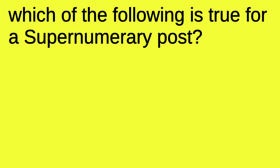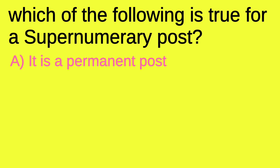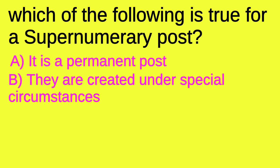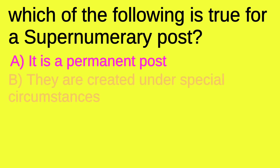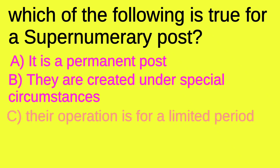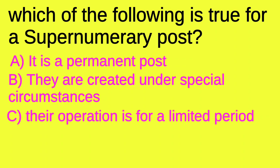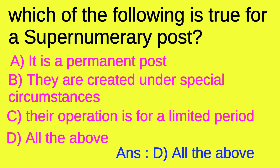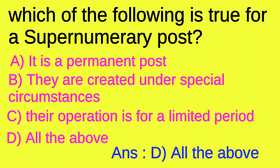Which of the following is true for a supernumerary post? Option A: it is a permanent post. Option B: they are created under special circumstances. Option C: their operation is for a limited period. Option D: all of the above. The answer is all of the above — option D.